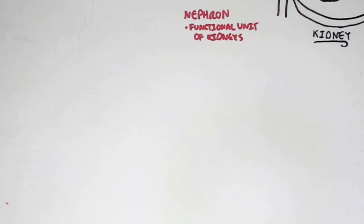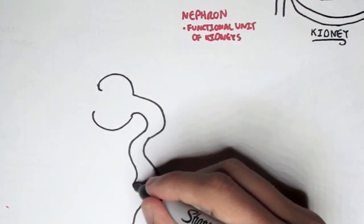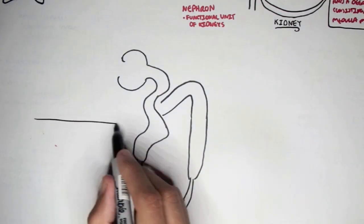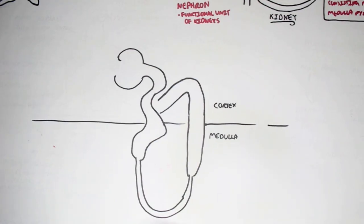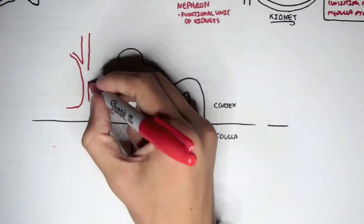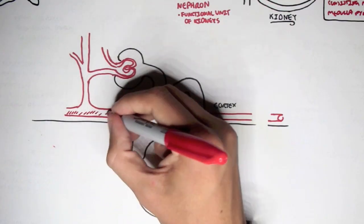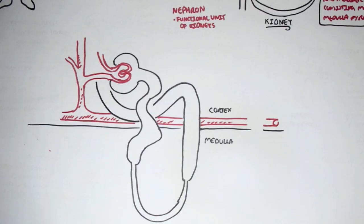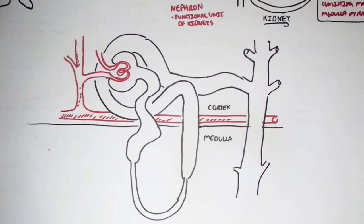Nephrons regulate blood composition and volume - nephrons are the big deal. Here you can see the head of the nephron, and it continues down to form a loop within the medulla, the renal medulla. As you can see here's the renal cortex. We have blood supply coming into the head of the nephron because blood begins getting filtered there. All the substances which have been filtered then travel through the nephron following this route, and then out through this long vertical tube known as a collecting duct.